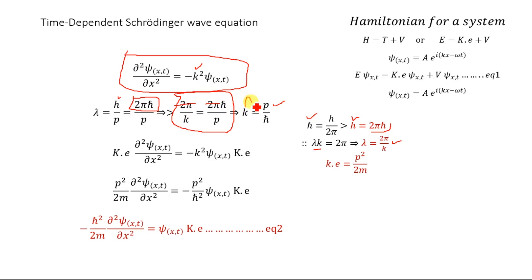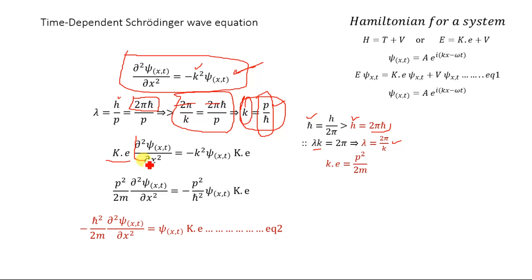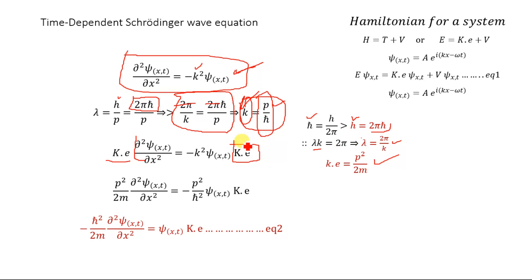We substitute k = p/ℏ into the second-derivative equation, then multiply both sides by kinetic energy KE = p²/2m. Substituting the values for k and kinetic energy, we get (p²/2m) · ∂²ψ(x,t)/∂x² = −(p²/ℏ²) · ψ(x,t) · KE.